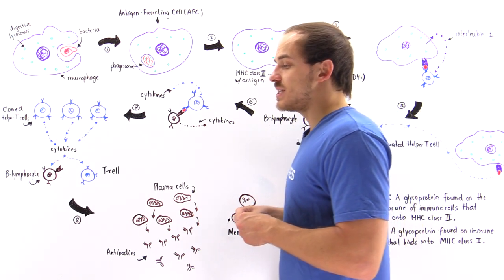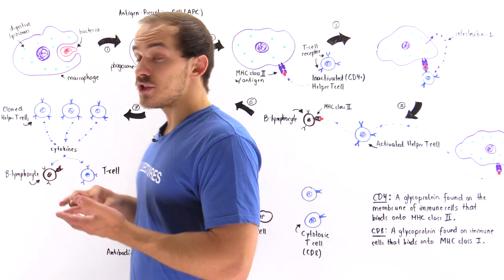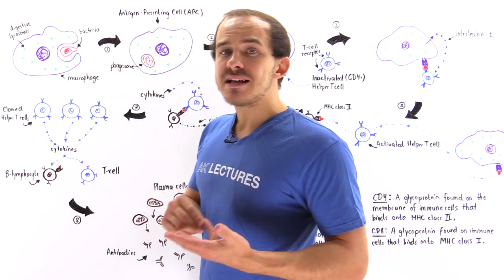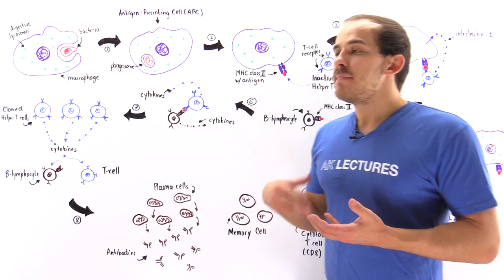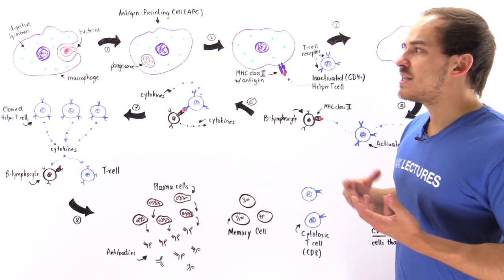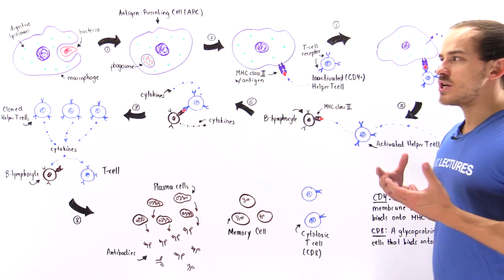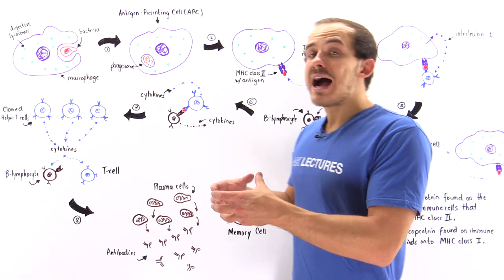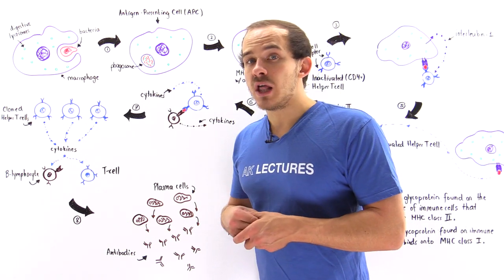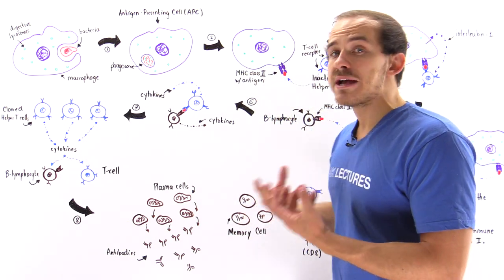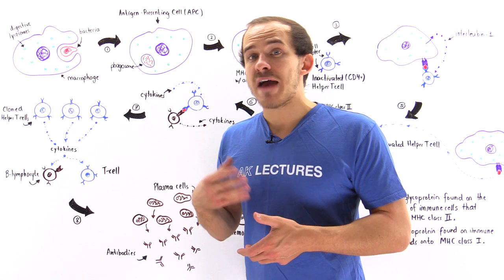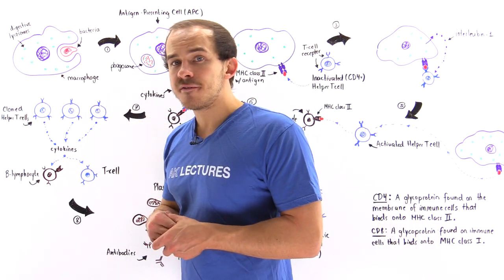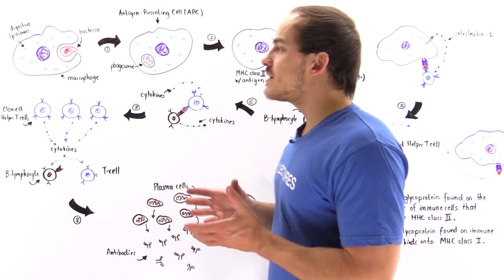What happens is special immune cells known as mast cells and basophils begin to release chemicals such as histamine. What that does is dilates our blood vessels and it brings specialized phagocytic immune cells known as macrophages to the site of infection.